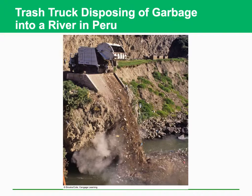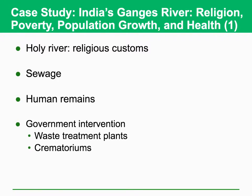Another example shows trash trucks disposing of garbage directly into a river. These pollutants can actually reduce water quality. There are a lot of case studies. For instance, in India, they have a holy river with some religious customs. But the problem is sewage coming into these rivers, and still many people use this river. The government intervention has been done to build wastewater treatment plants.